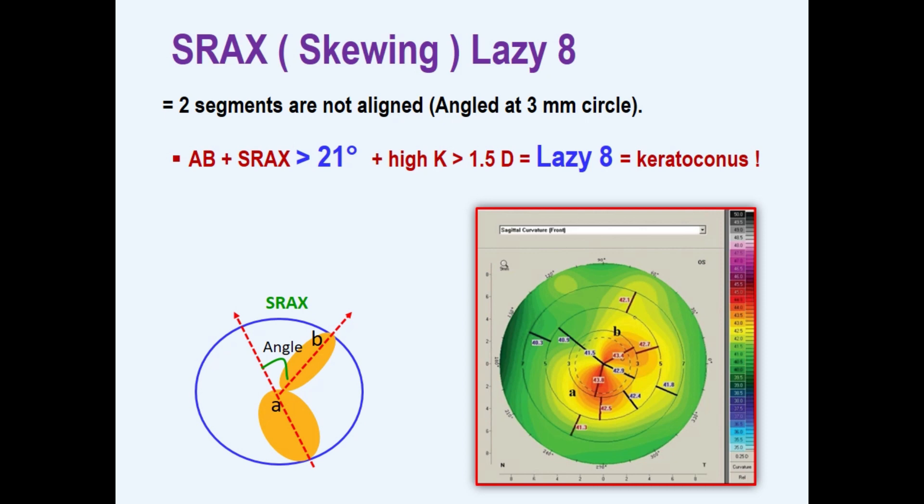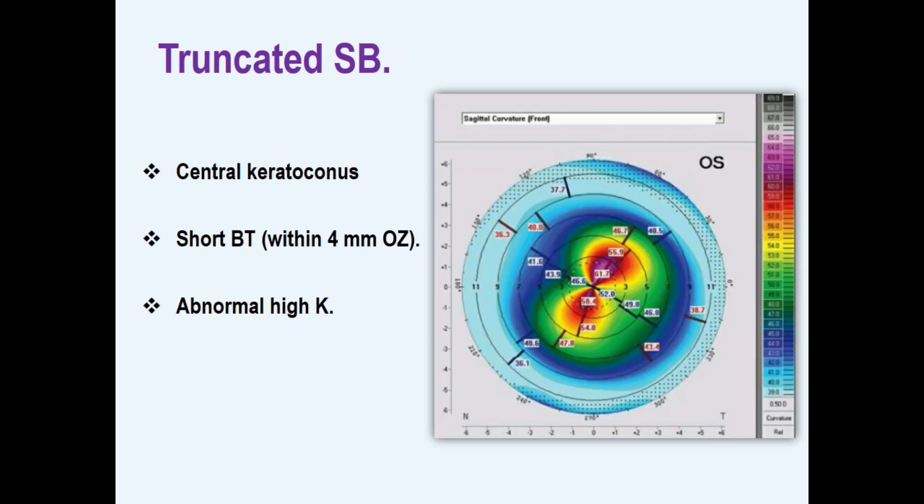And if associated with corneal astigmatism more than 1.5 diopters, it is suggestive of keratoconus. This is called lazy head pattern. What is the truncated symmetric bowtie? This is a short high power symmetric bowtie that is rarely encountered in central keratoconus.